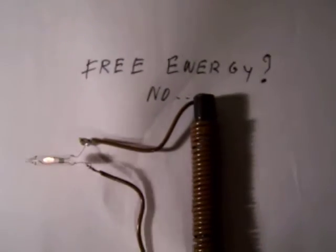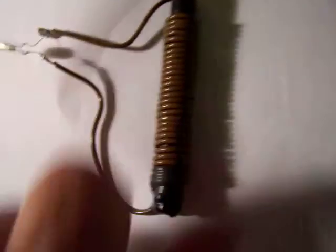Put out the lights and move the coil — the lamp keeps on burning. Of course this is no free energy. Under here is an oscillator, and it sends out radio waves — radio electromagnetic waves — on which the lamp burns.